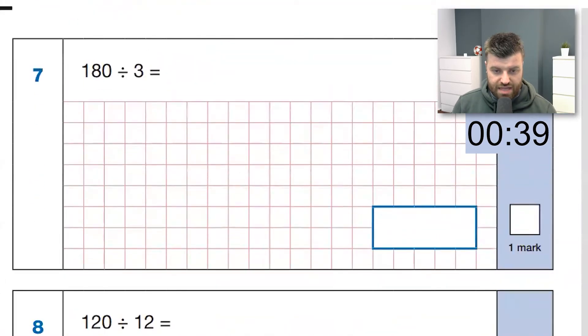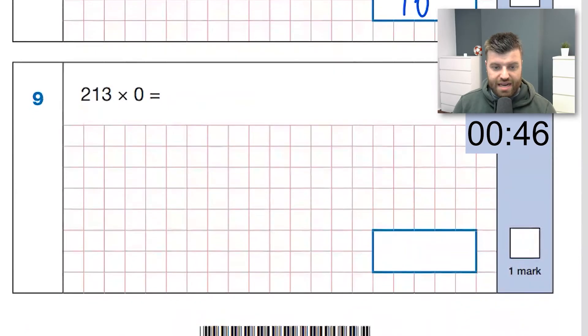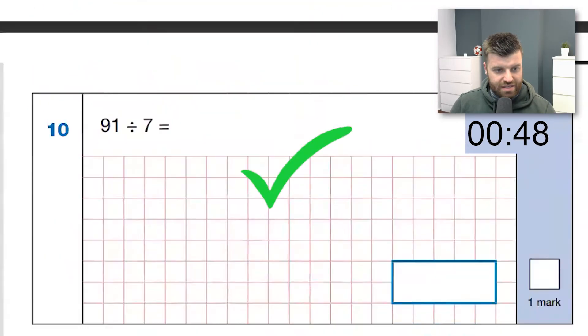Question seven, using times tables, that's six. Ten times bigger is 60. Here, divided by 12, that's just going to be 10. Use my times table facts again. Anything times zero is zero. Let's keep going. It's a good start.